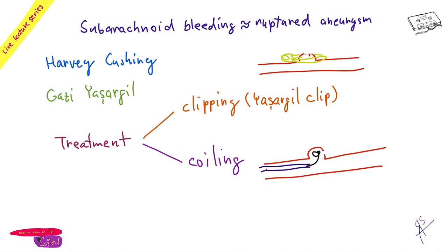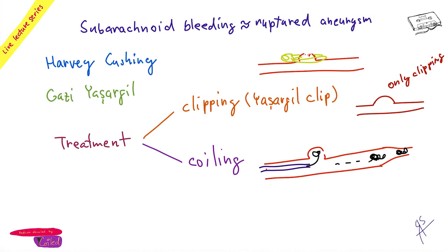The coils irritate the aneurysm sac, promoting thrombus formation and sealing it off. The danger of coiling is that a coil can migrate and cause a stroke. Also, if the aneurysm has a wide neck, coiling is not possible and you must clip instead. Overall, for the brain, endovascular coiling is preferable to open surgery when anatomically feasible.